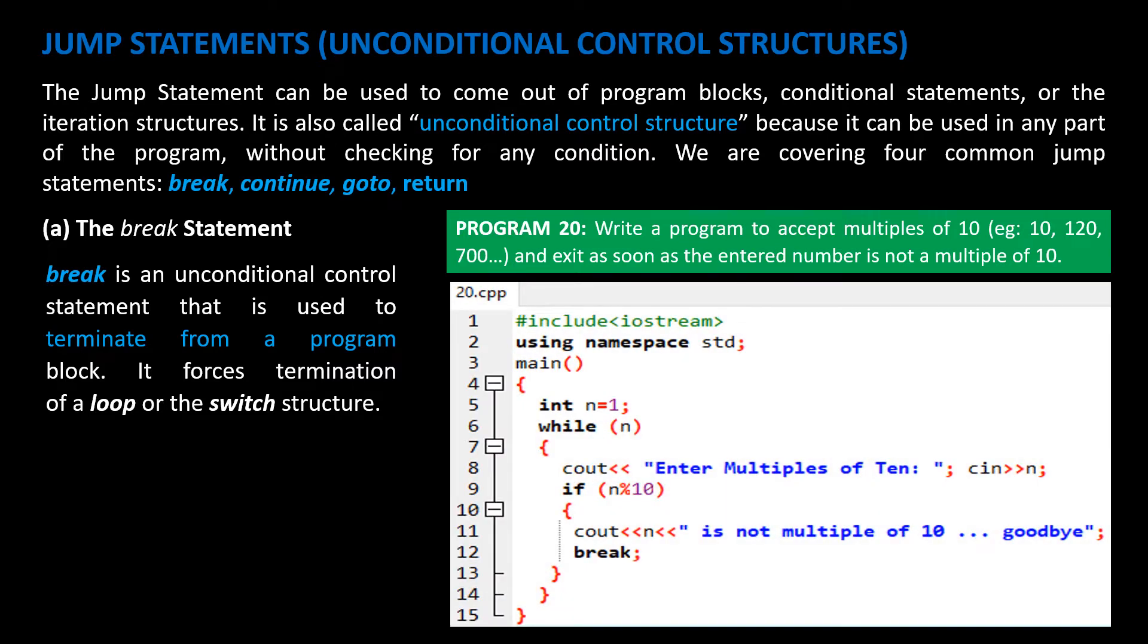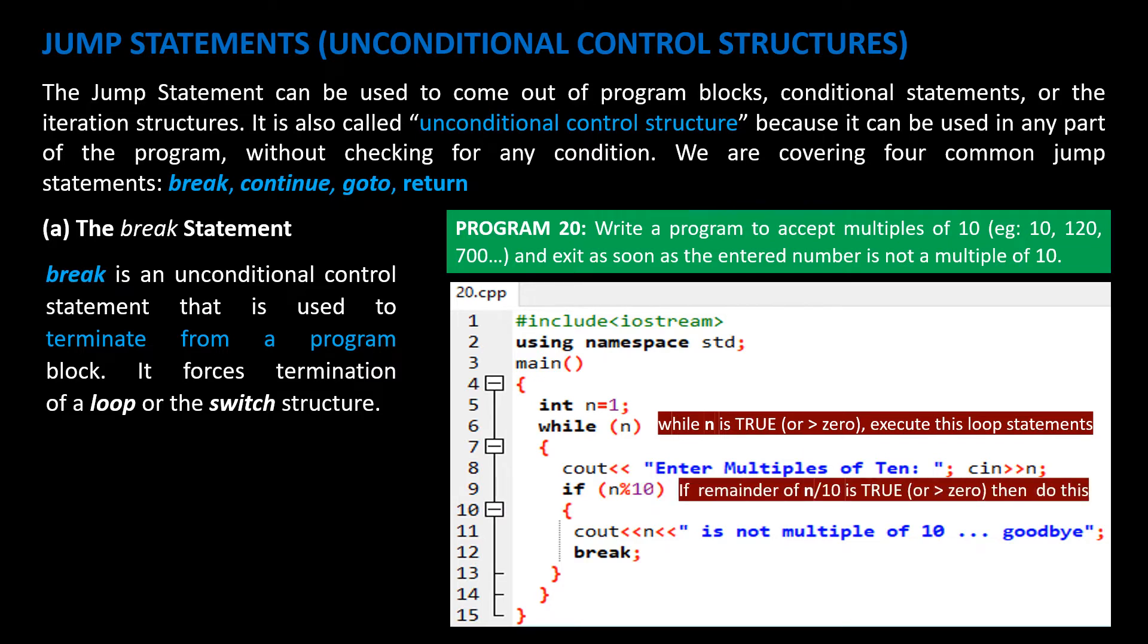Just two points. On line 6, it means while n is true or greater than 0, execute the statements. On line 9 it means if remainder of n divided by 10 is true or greater than 0, then enter this block. Check the output.